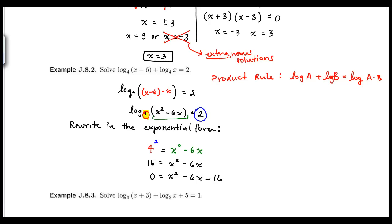I'll move 16 over to the right and get 0 equals x squared minus 6x minus 16. Then I'll factor: two factors of negative 16 that add up to negative 6 would be minus 8 and plus 2. I can set each factor equal to 0.